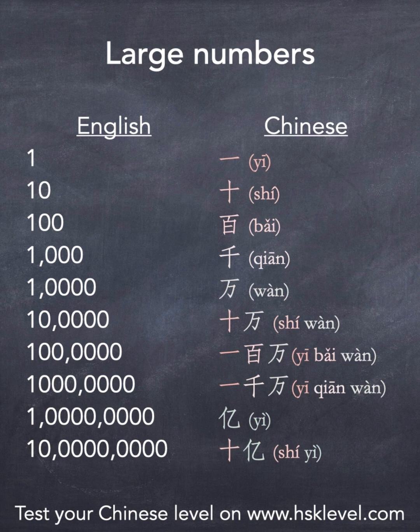One million is actually one hundred ten-thousands, so it is one hundred wàn — yī bǎi wàn. Then ten million is one thousand ten-thousands, so it is one thousand wàn — yī qiān wàn.